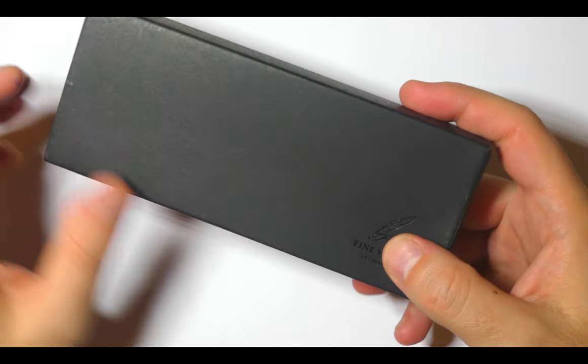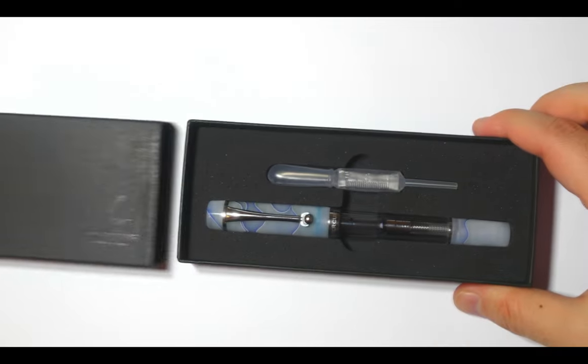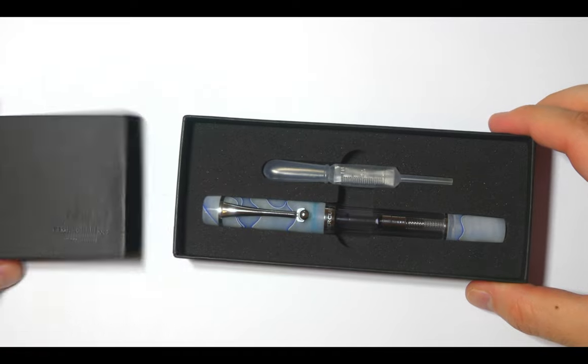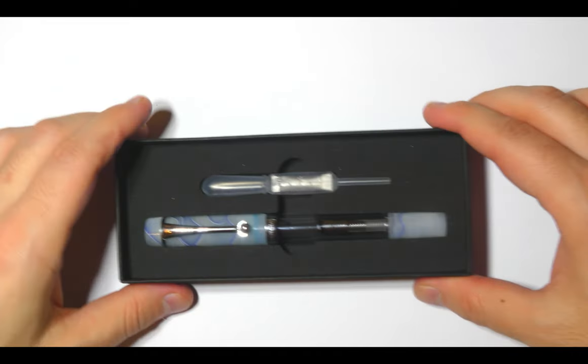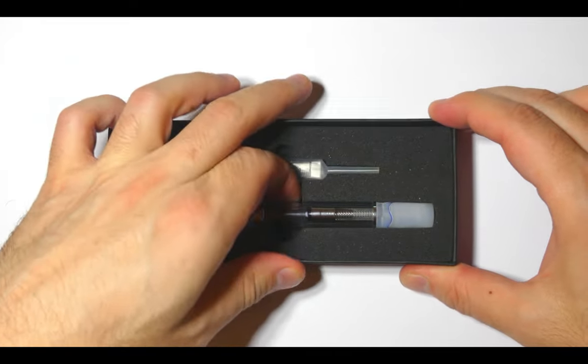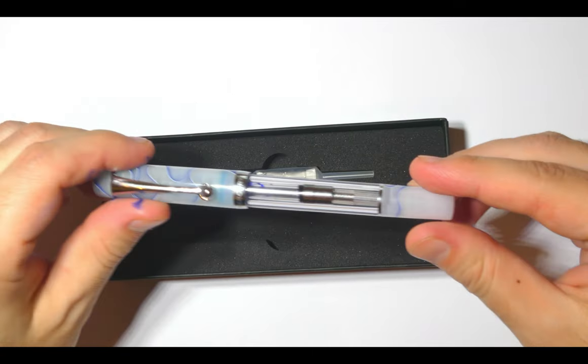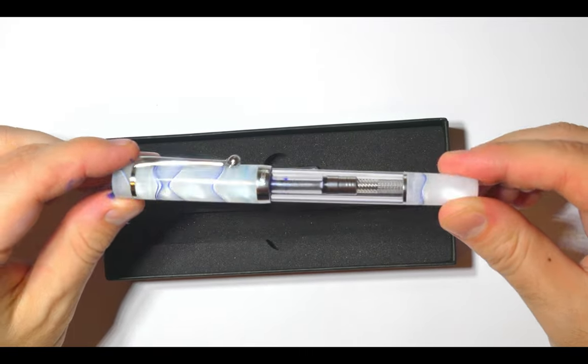In the box you can see the pen and a plastic eyedropper. The converter is inside the pen when you receive it and it is an international standard silver color converter that matches the finish of the pen. No cartridge is provided.